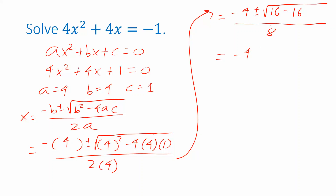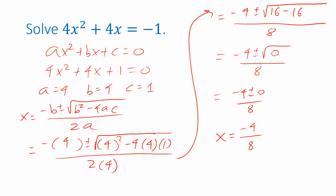Simplifying inside the square root: 16 minus 16 is 0, and the square root of 0 is 0. The two solutions are actually the same thing — using the plus sign gives negative 4 plus 0, and using the minus sign gives negative 4 minus 0; both are identical. So we really only get one solution from this equation: everything simplifies to negative 4 over 8, which further simplifies to negative one-half.